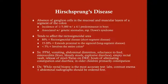The most classic symptom is failure to pass meconium within 24 hours of birth. Vomiting, abdominal distension, and reluctance to feed are all associated with chronic constipation. Enterocolitis can develop, presenting with fever, bloody stools, and explosive diarrhea. On physical exam, you'll note an empty rectal vault because stool is not getting down there as it should.